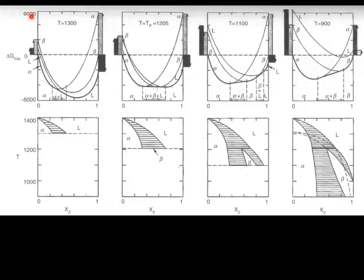So, these show delta G mixing versus X2, again, for three phases, alpha and liquid and beta, and the reference states are being accounted for. That's what these bars are on the sides. The reference state for component one is alpha. The reference state for component two is beta, at all of these temperatures. And we have decreasing temperature, 1300, 1205, 1100, and 900.